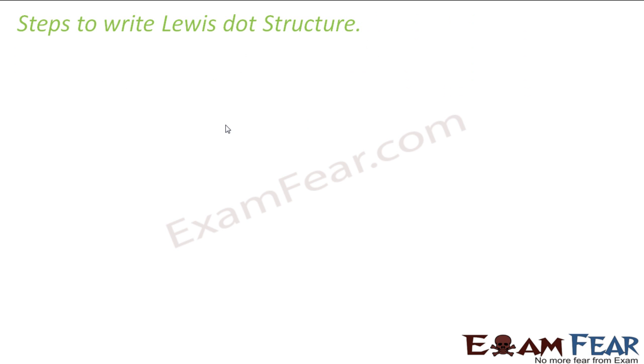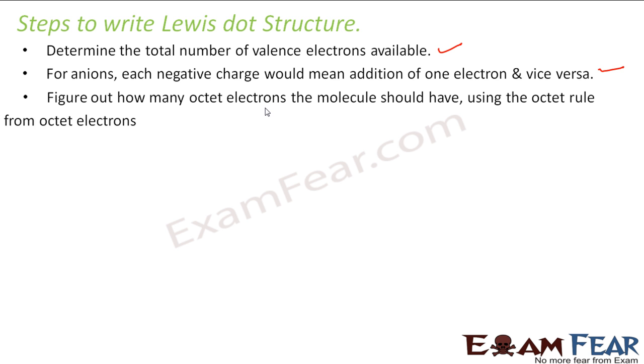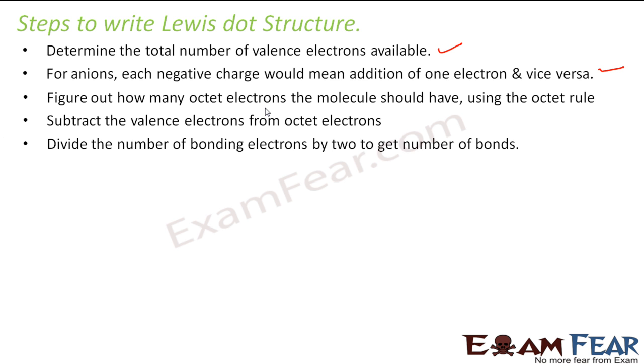So there are some steps to write the Lewis dot structure. The first step is find the total number of valence electrons available in all the atoms. For anions, each negative charge would mean addition of one electron. And for cations, one removal of electron. Then you need to find out how many octet electrons the molecule should have using the octet rule. Subtract the valence electrons from the octet electrons and divide the number of bonding electrons by two to get the number of bonds. So this is not mandatory step, but if you want you can take these steps if you want to know the number of bonds.